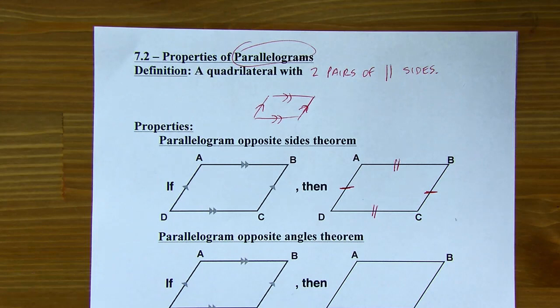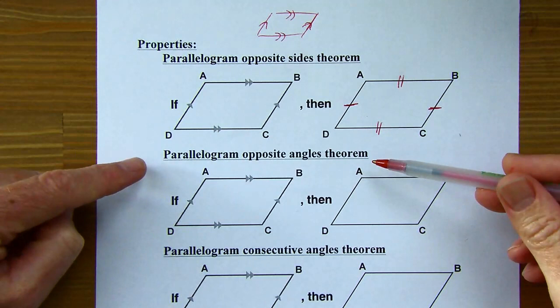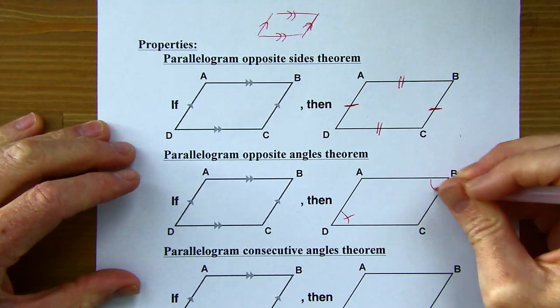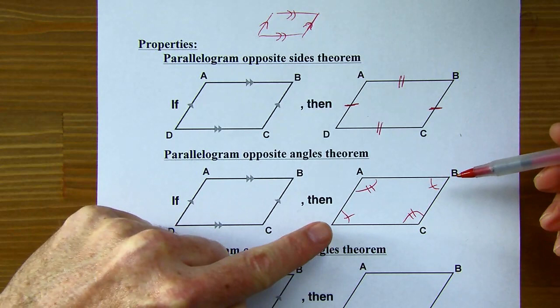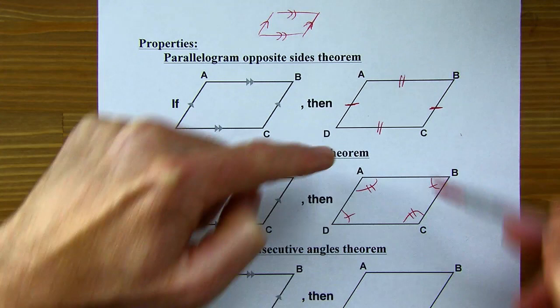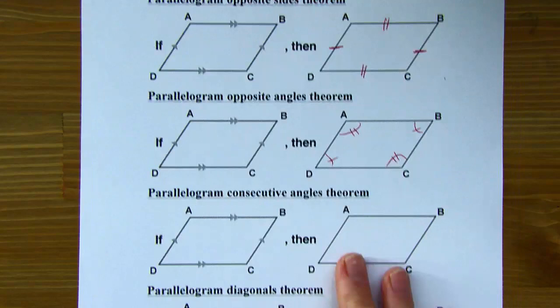The parallelogram opposite angles theorem: in a parallelogram, the opposite angles are always congruent. So in most parallelograms — if it's a rectangle, this would be different; a rectangle is a special type of parallelogram — but in most parallelograms, we've got two acute angles and two obtuse angles. The two acute ones are congruent, the two obtuse ones are congruent, and they're opposite each other.